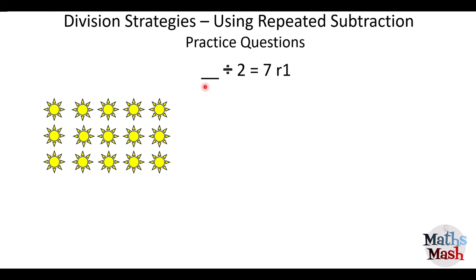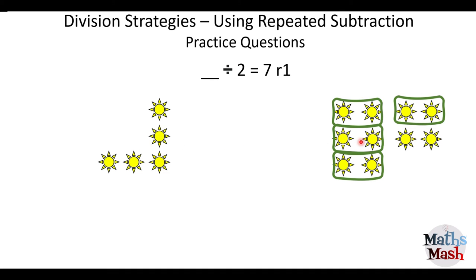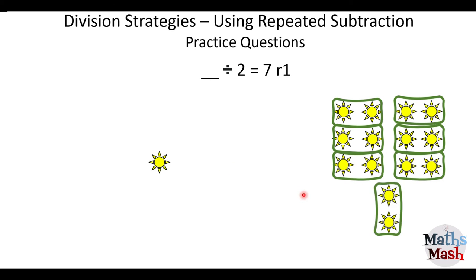Okay, so I've got a collection of sons here. And they have to be put into groups of two. All right, so there's two, four, six, eight, ten, twelve, and fourteen. So you can see I've got seven groups and one left over. So seven groups of two and one left over. That means I've got 15 sons all together.